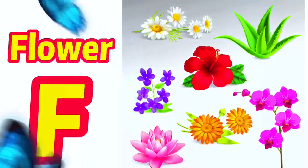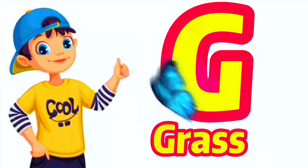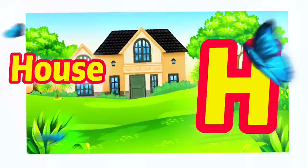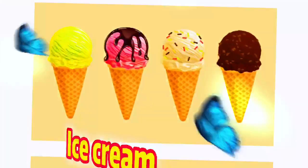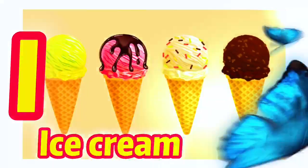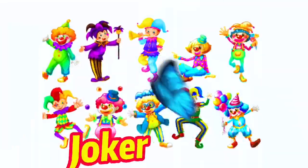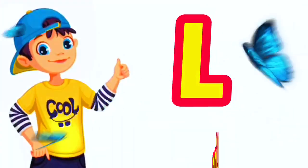G for grass, H for house, I for ice cream, J for joker, K for kite, L for lion.